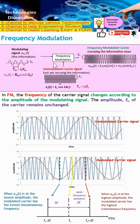Next, we move on to the carrier. As the name implies, the carrier simply helps to carry the information. The carrier here is known as the unmodulated carrier signal because it has not carried any information yet. The carrier typically has a higher frequency compared to the modulating signal.